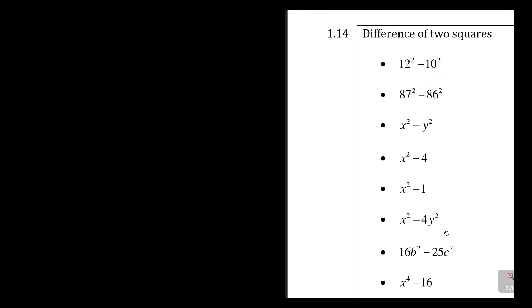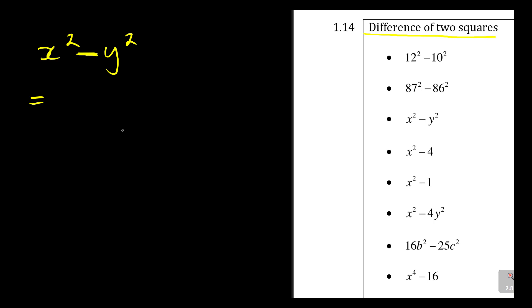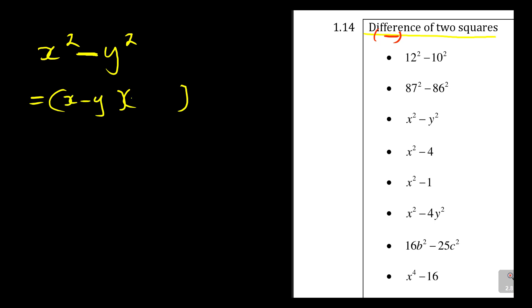So what do we mean by difference of two squares? If they say x squared minus y squared, this is it. 'Difference' means minus, so you always look for a minus sign. There are two squares — x squared is the first, y squared is the second. When you open the brackets, forget about the squares: you see x minus y in the first bracket, then x plus y — just interchange the sign.